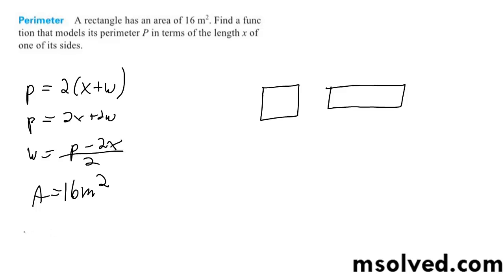So representing one side, x, times the width, which is p minus 2x over 2, equals 16 meters squared.